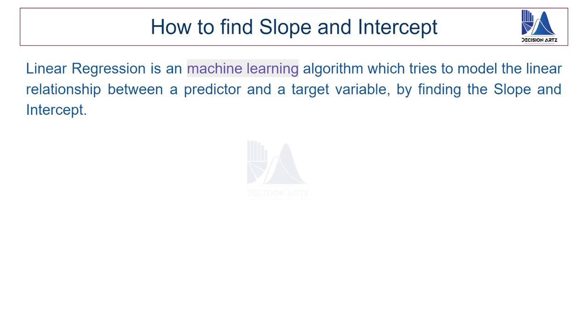It starts with how do we find the slope and the intercept. There are two popular methods to find the slope and the intercept. And the first one is ordinary least squares. And the other one is called gradient descent.